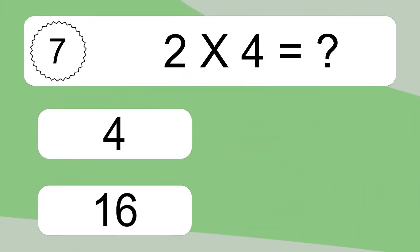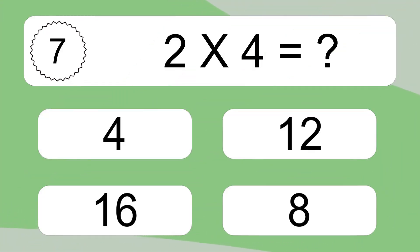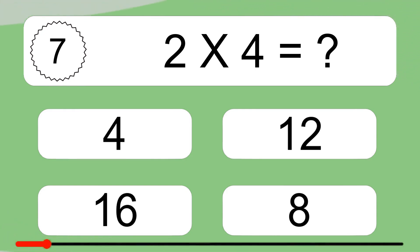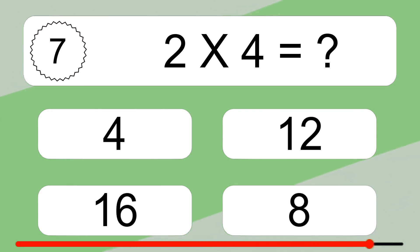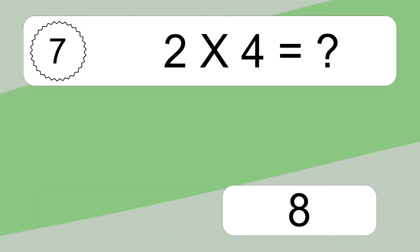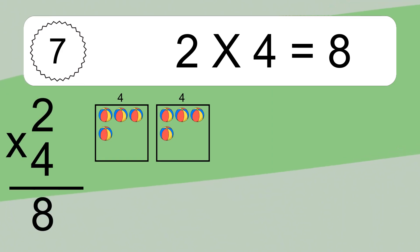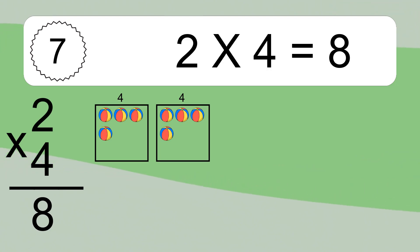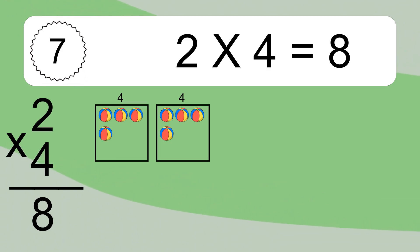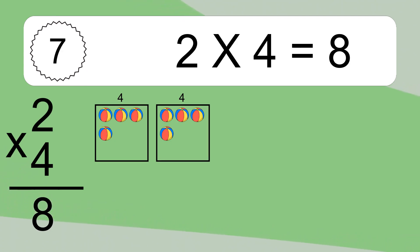2 times 4 equals what? 2 times 4 equals 8. We have 2 boxes, and each box has 4 colorful balls inside. If you count all the balls in all the boxes together, you will have 2 times 4 balls. This equals 8 balls.